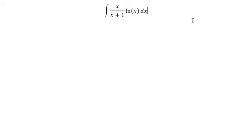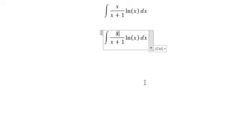We have x in the numerator, so we put (x+1) minus 1, then we have (x+1-1) divided by (x+1). This becomes 1 minus 1/(x+1) times ln(x).